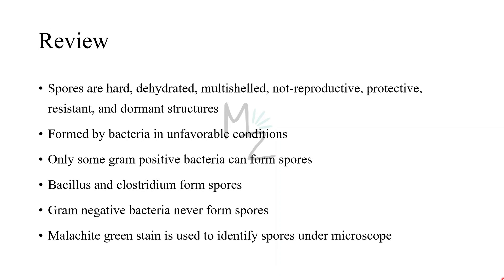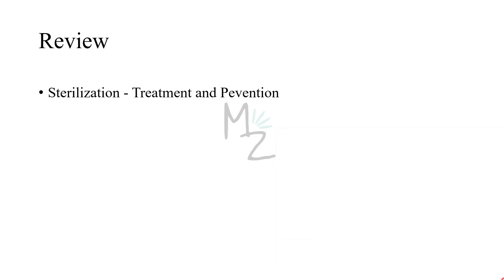Let's review everything quickly. Spores are hard and dehydrated due to calcium, multi-shelled due to inner and outer membranes and two peptidoglycan layers, non-reproductive, protective, resistant, and dormant structures — because bacteria can live inside the spore for centuries. Spores are formed by bacteria in unfavorable conditions like food scarcity. Only some gram-positive bacteria like Bacillus and Clostridium can form spores, but gram-negative bacteria never make spores. Malachite green stain is used to identify spores under the microscope, where they appear as bright and refractile structures. Treatment is essentially sterilization.